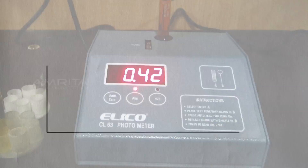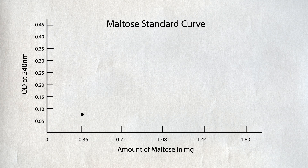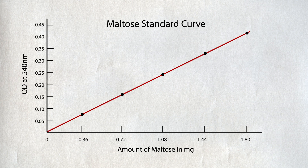Now plot the graph with the amount of maltose along the x-axis and the optical density along the y-axis. The maltose calibration curve is constructed as a straight line passing through the origin.